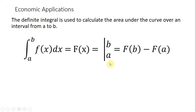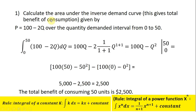Let's do some numerical examples. We'll calculate the area under the inverse demand curve, where the inverse demand curve is given by P equals 100 minus 2Q, over the range of output 0 to 50 units.